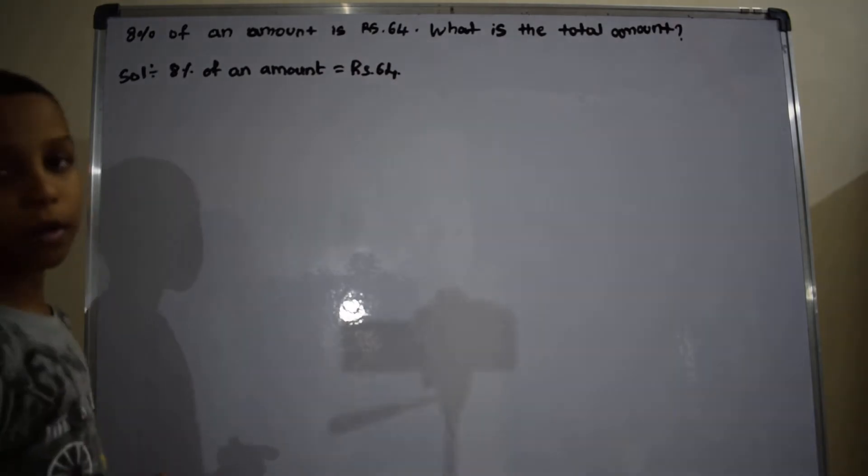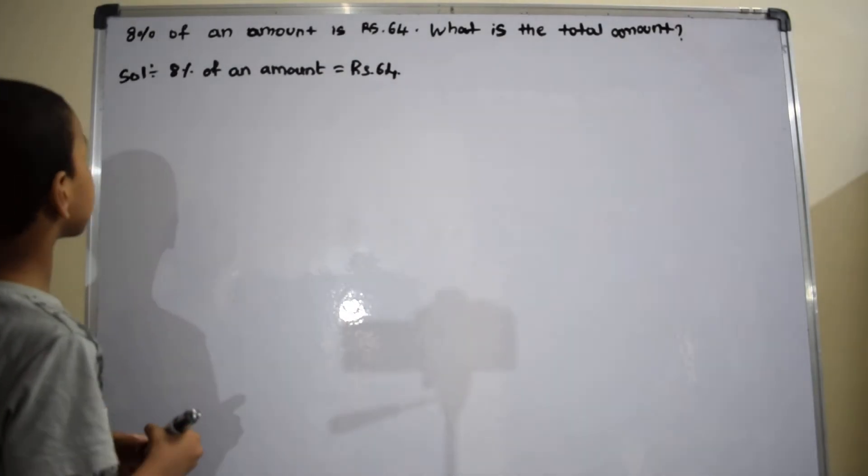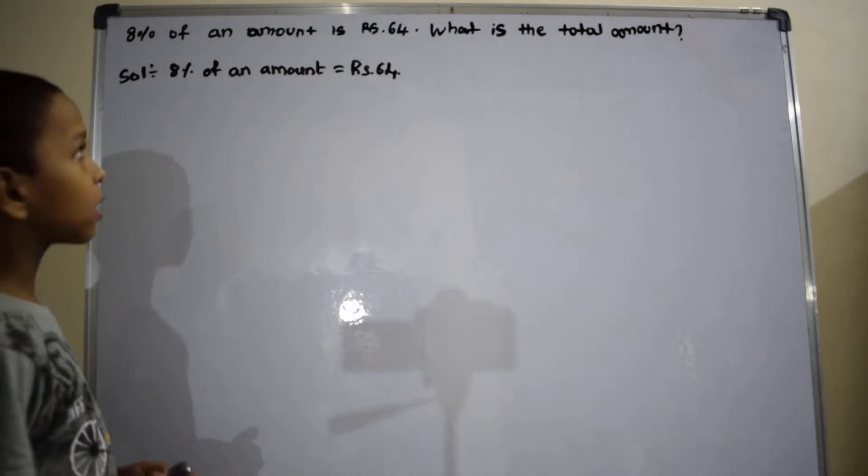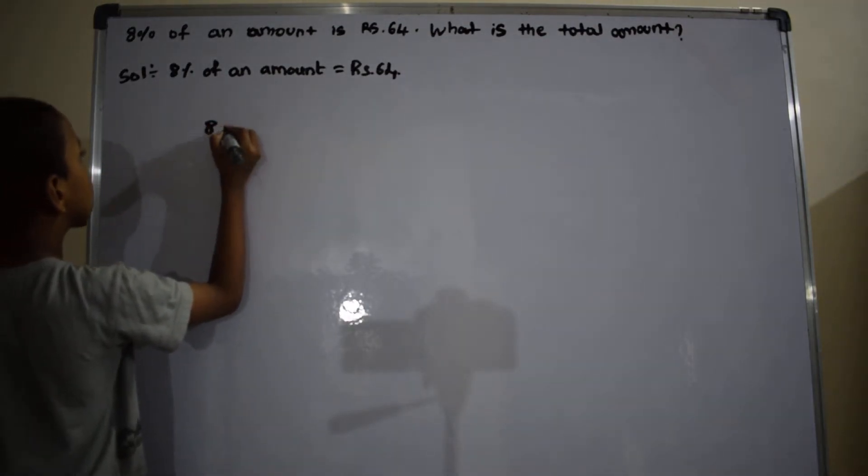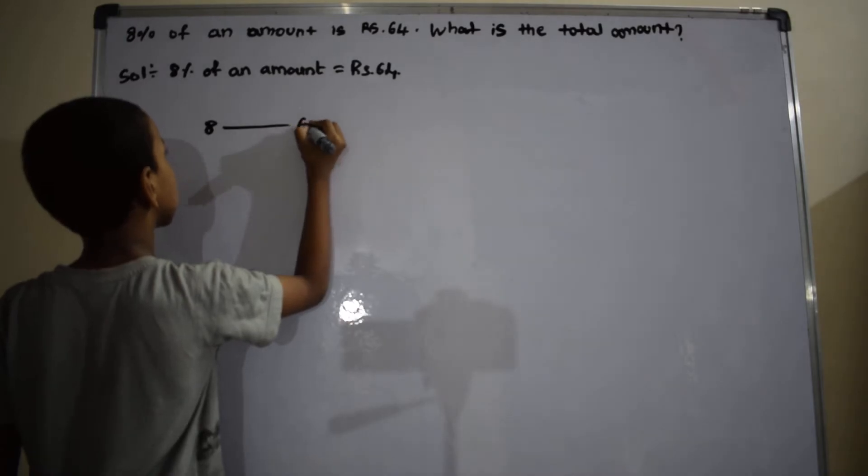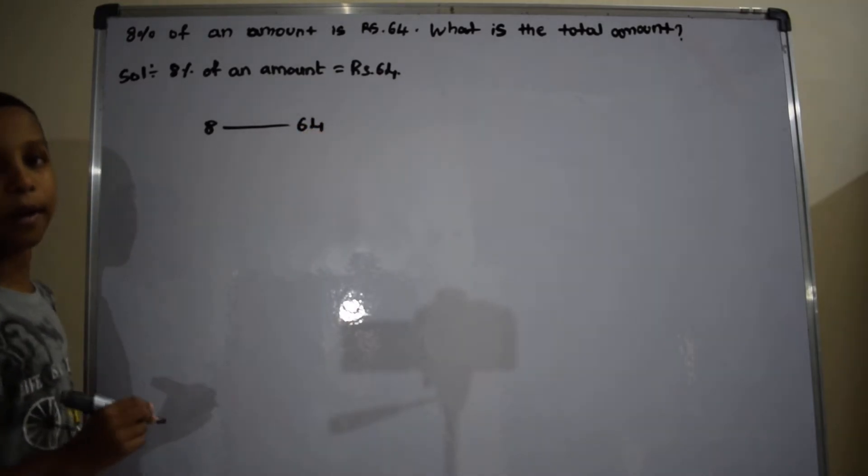So there is a simple logic. For 8%, I have 64. For 100%, how much?